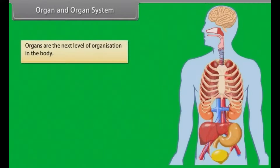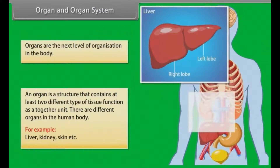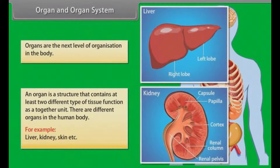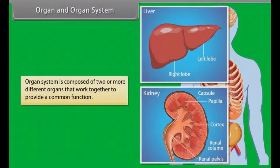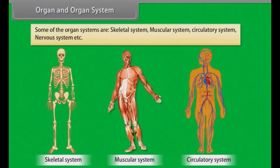Organs are the next level of organization in the body. An organ is a structure that contains at least two different types of tissue functioning together as a unit. There are different organs in the human body — for example, liver, kidney, skin, etc. Organ system is composed of two or more different organs that work together to provide a common function. Some organ systems are: skeletal system, muscular system, circulatory system, nervous system, etc.